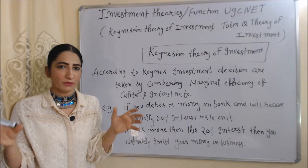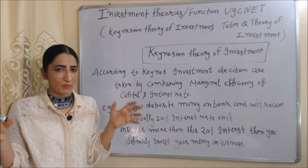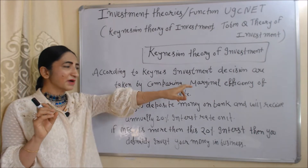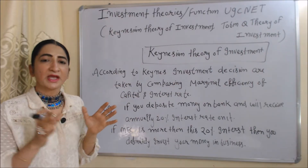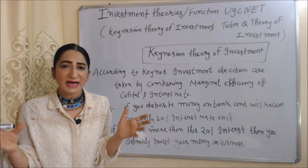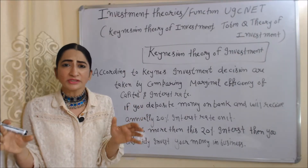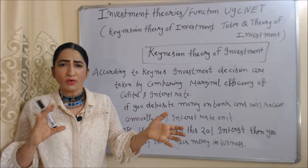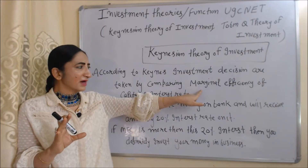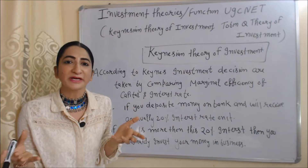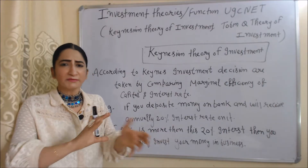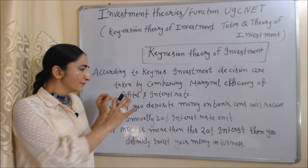First of all, we are going to talk about Keynesian theory of investment. According to Keynesian theory, investment decisions are taken by comparing marginal efficiency of capital with interest rate. How much money we invest in our business depends on marginal efficiency of capital and the interest rate in the market. Marginal efficiency of capital means profit expectation from new business investment — how much profit we expect from new business investment.